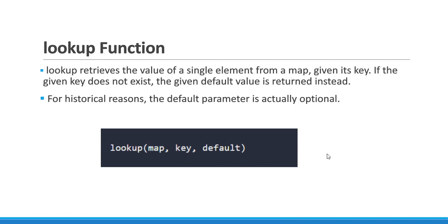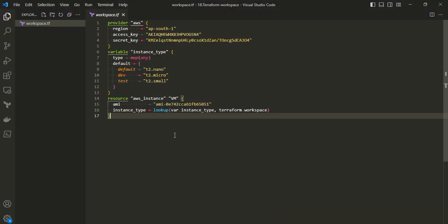Now I want to briefly explain the lookup function, which we will use in our demo. The lookup function retrieves the value of a single element from a map given its key. If the given key does not exist, the given default value is returned instead. The syntax is: lookup(map, key, default) — where default is optional. This will be clearer when we run the demo.